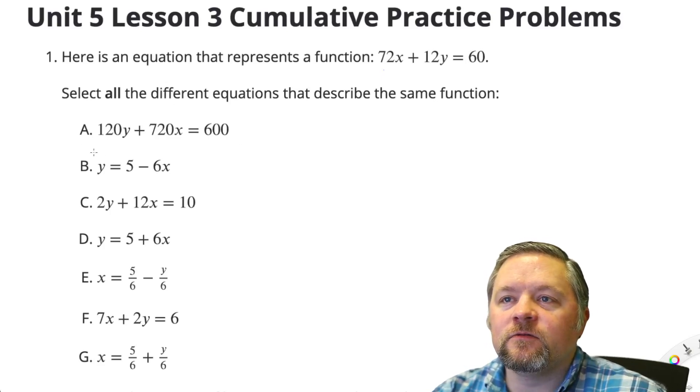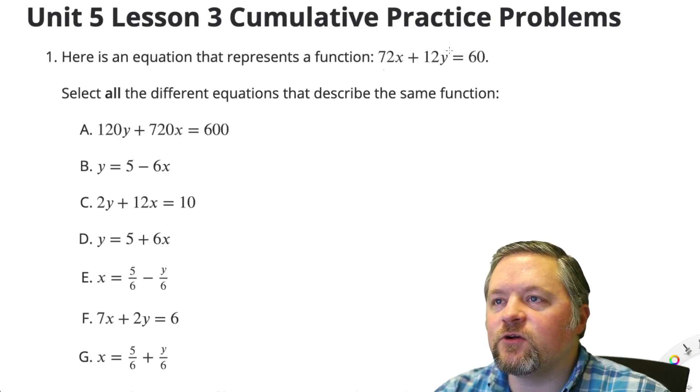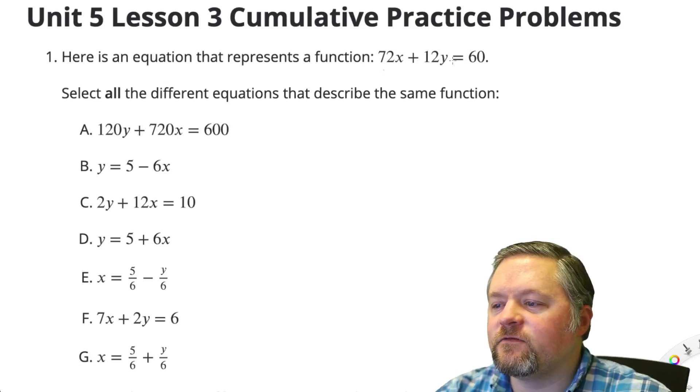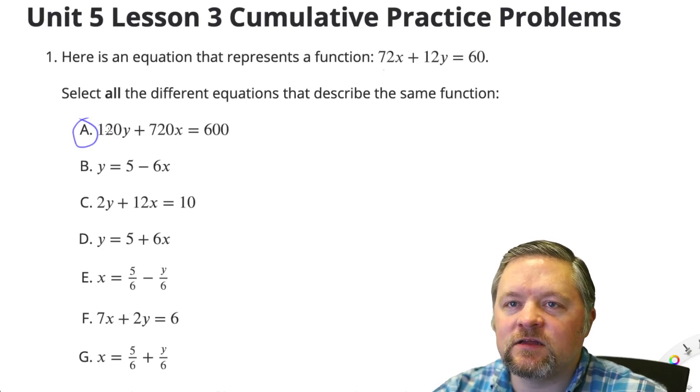So how are we going to be able to tell if these are equivalent to that? Well, this first one looks to me like if you multiply everything of the original by 10. 10 times 60 is 600, 10 times 12y is 120y, 10 times 72x is 720x. That works.